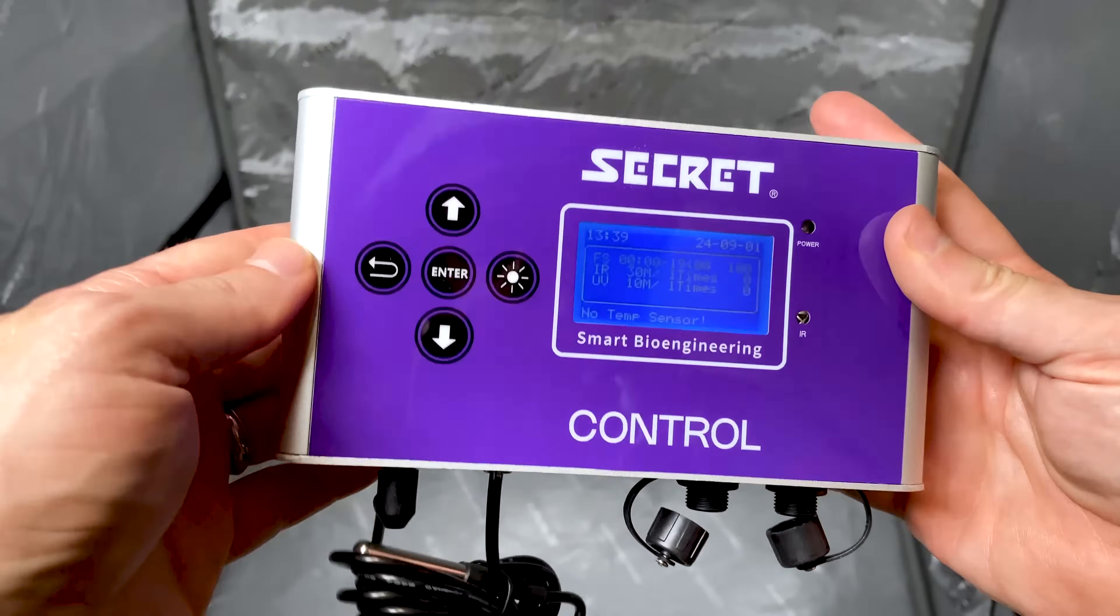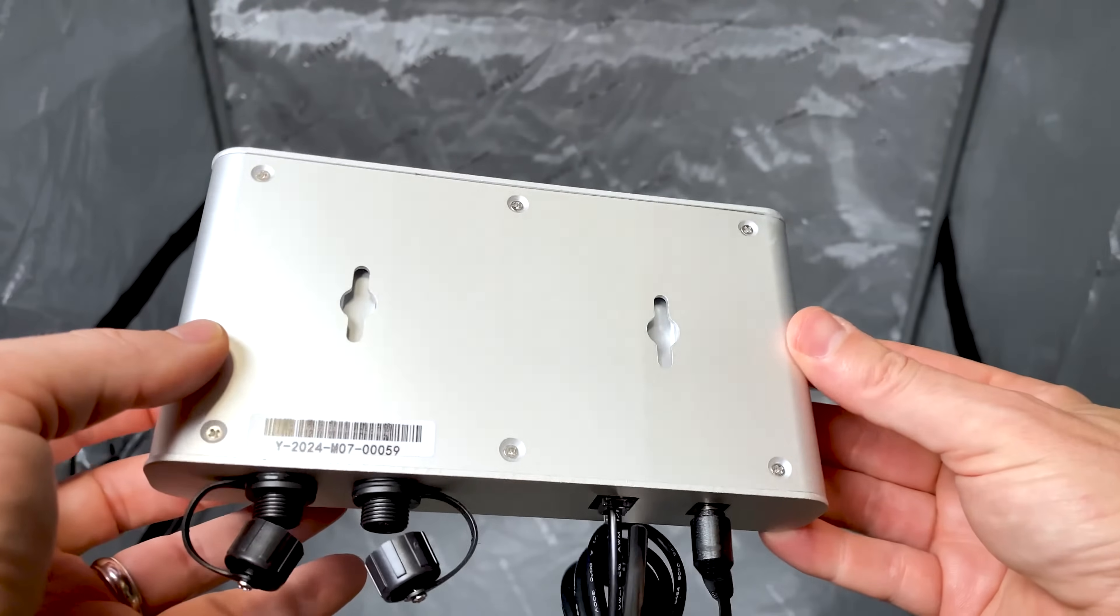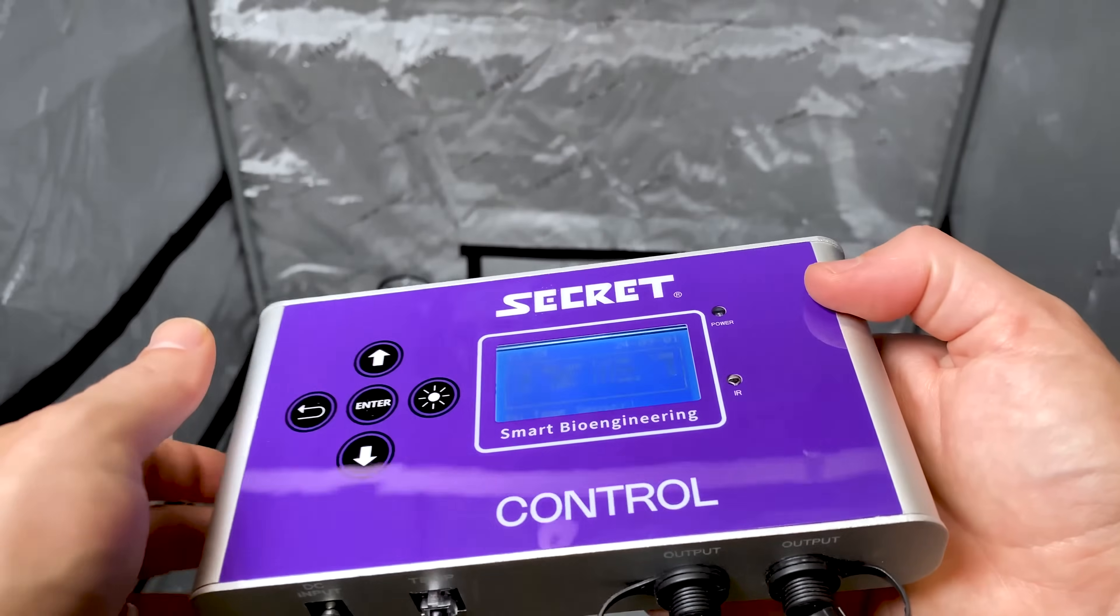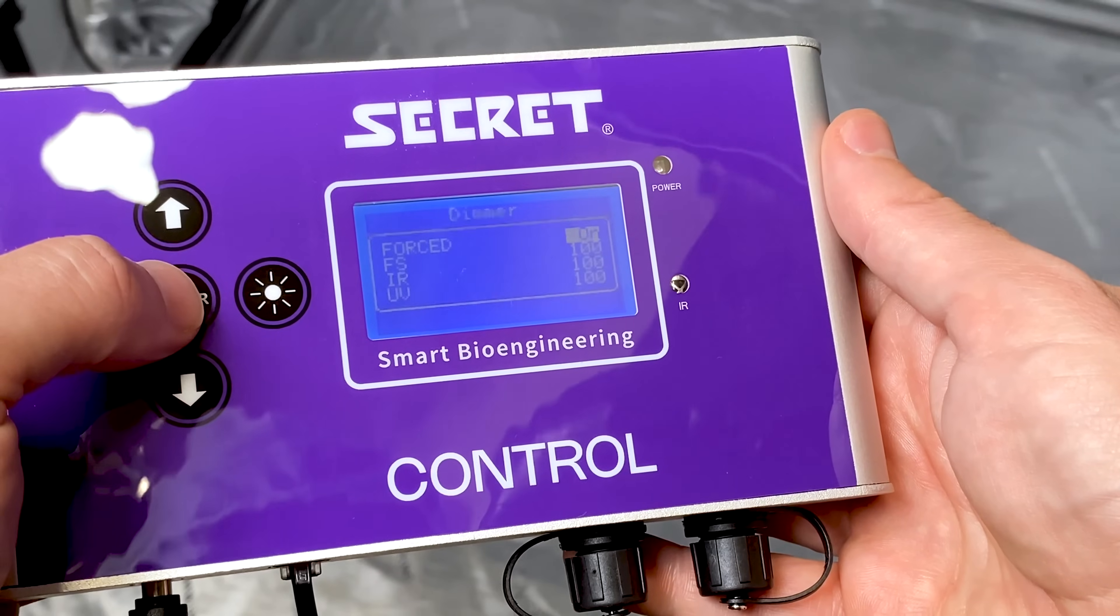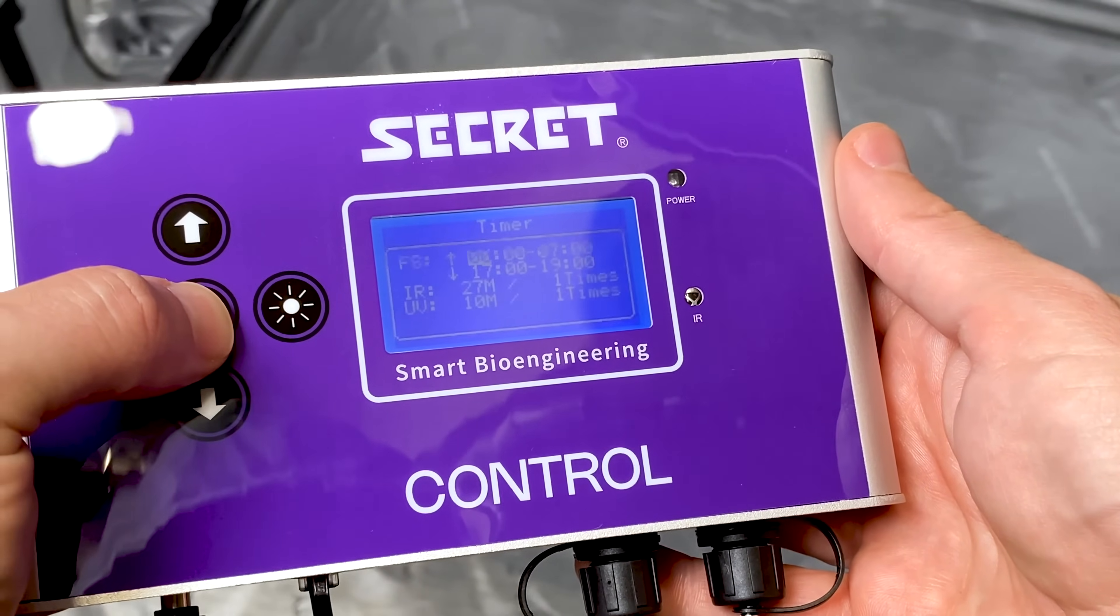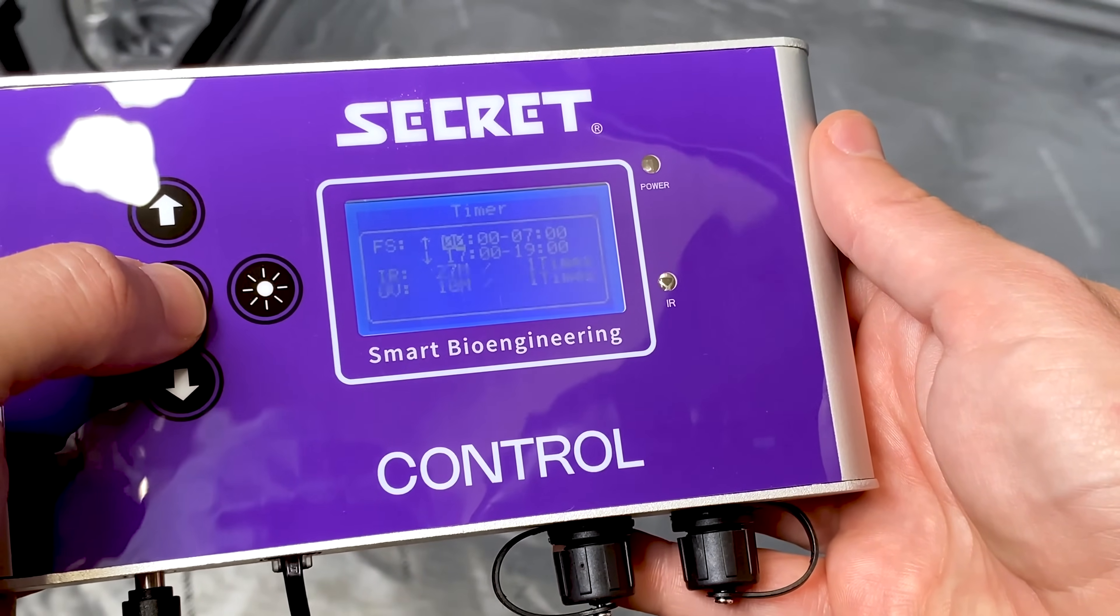For growers seeking greater control, the Secret Lighting controller, which is sold separately, unlocks the fixture's full potential. This controller enables external dimming, on-off scheduling, and advanced features like sunrise-sunset programming.